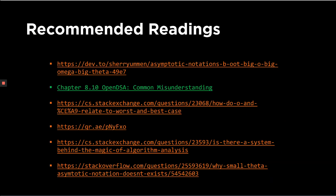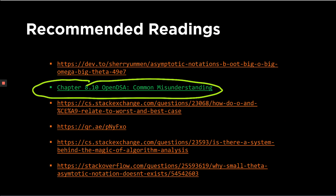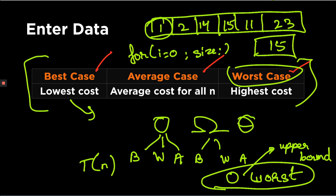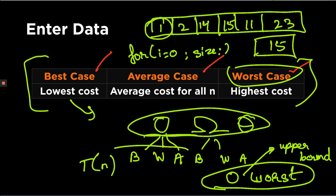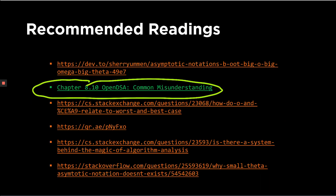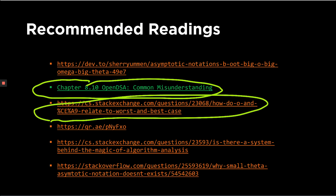I would definitely recommend the OpenDSA 8.10 reading — it's just one page and it explains why the mathematical notations Big O, Omega, and Theta are independent of the best, worst, and average cases. There are also readings on how O, Theta, and Omega relate to each other. In Monday's video we will do a lot more problems on Big O. That's pretty much it for today's lecture.